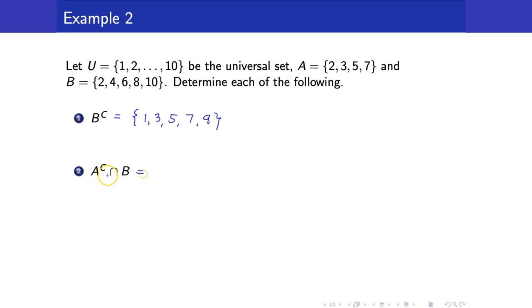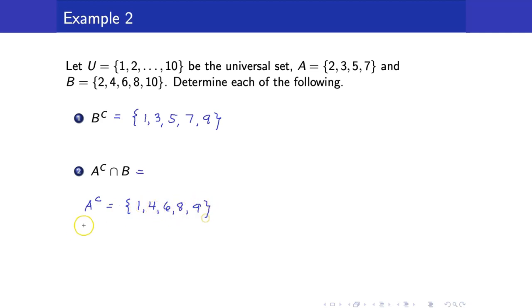Next, let us compute A complement intersection B. A complement would be {1, 4, 6, 8, and 9}. And of course, B is {2, 4, 6, 8, 10}.